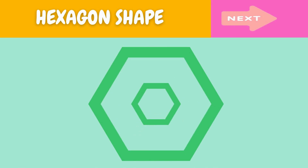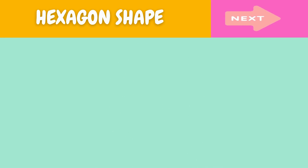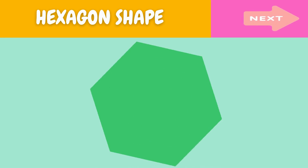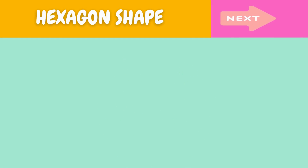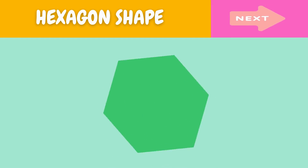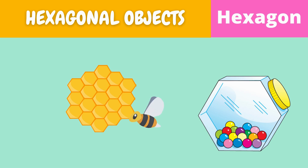This is a hexagon shape. What is this? This is a hexagon shape. Here are some examples of hexagonal objects.